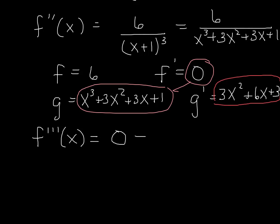3x squared plus 6x plus 3 times the first function. So I'm going to put the 6 in front: 6 times 3x squared plus 6x plus 3.